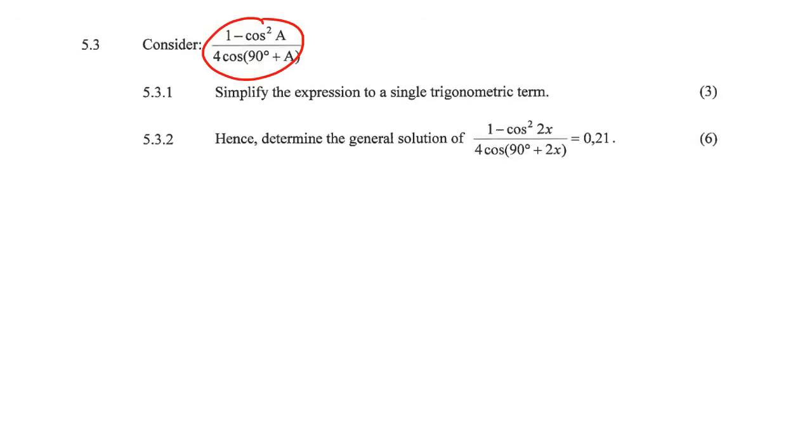Consider the expression, and then it says for three marks, so it won't be too bad. Simplify this expression to a single trigonometric term. Okay, so if we look at the top, if you look at that entire expression, we know that sin squared x plus cos squared x is equal to one.